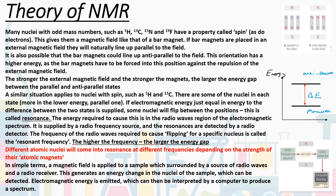The stronger the external magnetic field and the stronger the magnets are, the larger that energy gap between the parallel and anti-parallel states will be. I've shown this on an energy diagram on the right: energy up the y-axis, with our lower energy parallel state, our higher energy anti-parallel state, and the difference in energy delta E between the two states. The stronger the external magnetic field and the stronger the actual magnetic strength of the magnets, the bigger this energy gap will be.